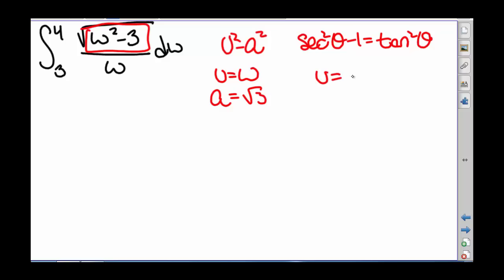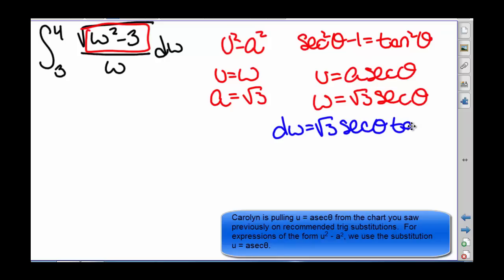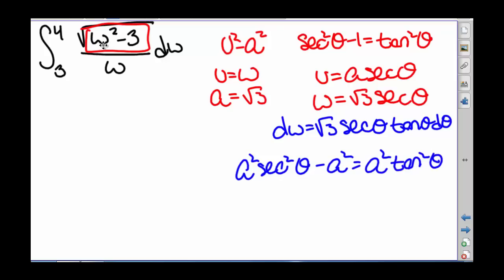So that means that w equals square root of 3 secant of theta. We know we're going to plug in: if we have a squared secant squared of theta minus a squared, that equals a squared tangent squared theta. So since w equals square root of 3 times secant of theta, that means that w squared minus 3 equals 3 tangent squared theta.